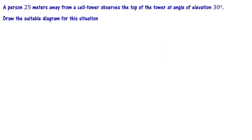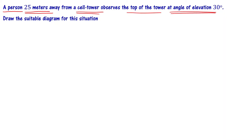A person 25 meters away from a cell tower observes the top of the tower at an angle of elevation of 30 degrees. Draw the suitable diagram for this situation. There is a person and there is a cell tower. The distance between them is 25 meters. That 25 meters distance, the base point is A, and the top of the tower is B. The angle of elevation from the person is 30 degrees.